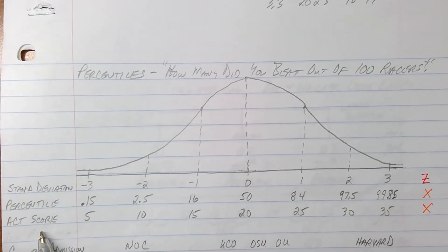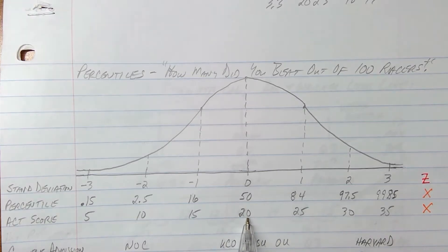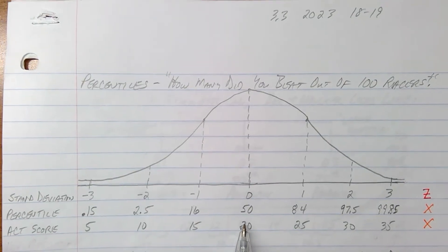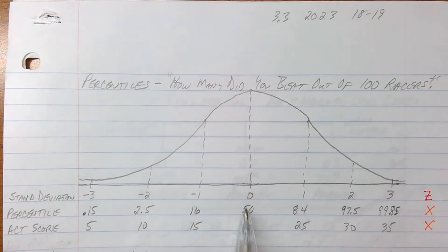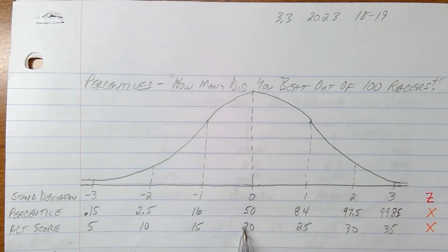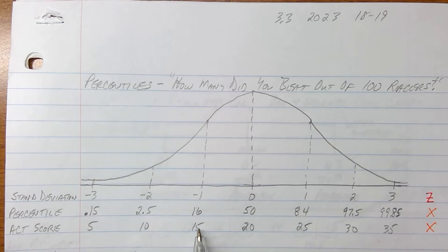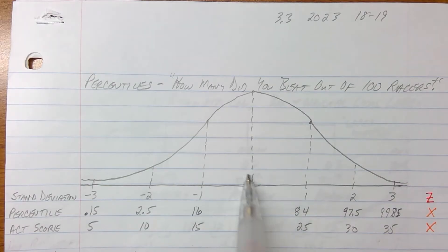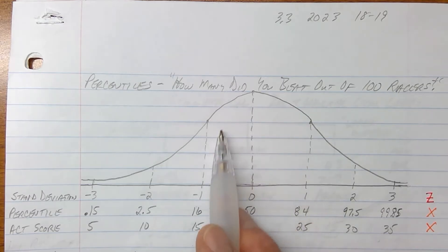For example, look at the ACT scores lined up here. An average ACT score out of all the high school seniors and juniors who took the ACT — the average score is about 20. And remember, average is the mean, that's the high point of the curve, goes in the middle. The average is 20 and the standard deviation is five, so give or take five points either way. If I subtract five I get 15, if I add five I get 25. ACT scores from 15 to 25 — that's one standard deviation either way.